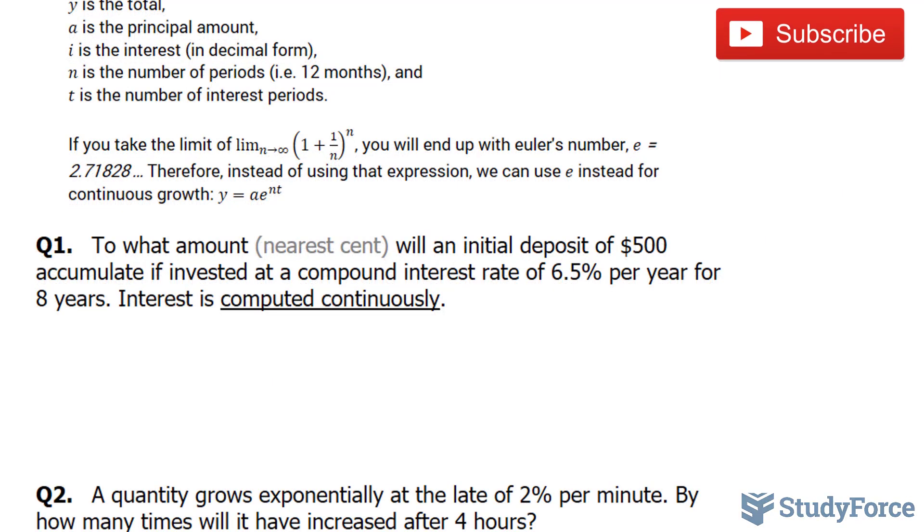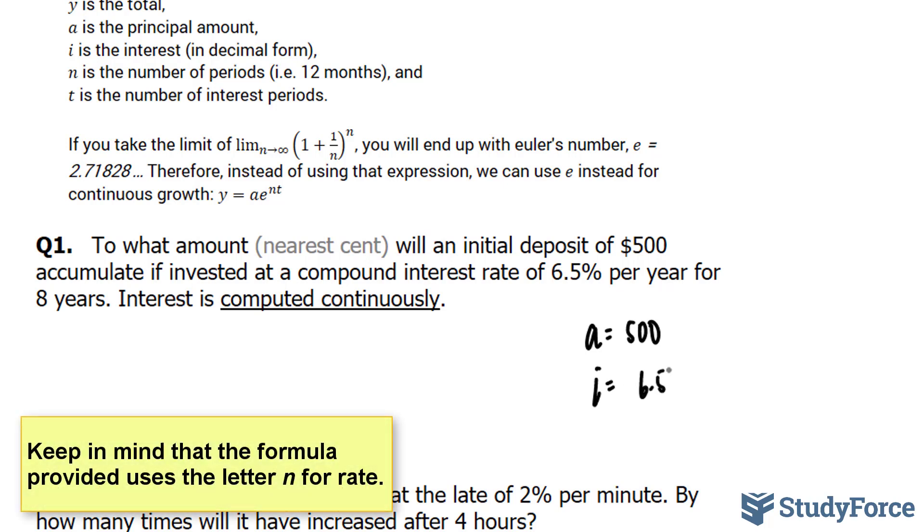To do this question, let's outline everything that has been given to us. We are told that the principal amount is $500. That will serve as our A, so A equals 500. The interest rate is 6.5%, and that has to be in decimal form. So we take 6.5 and divide it by 100. i equals 6.5 divided by 100, which gives us 0.065.